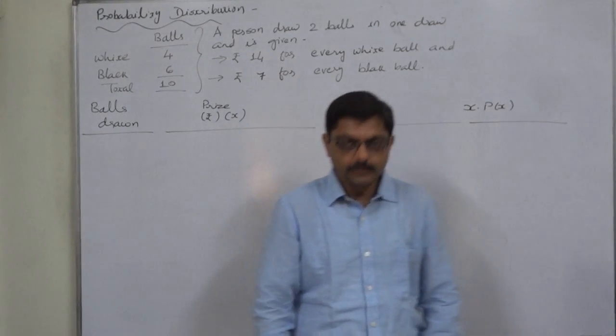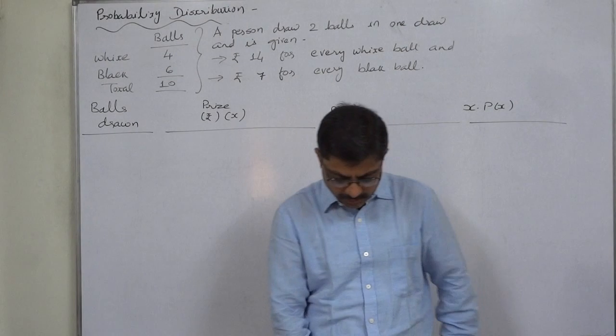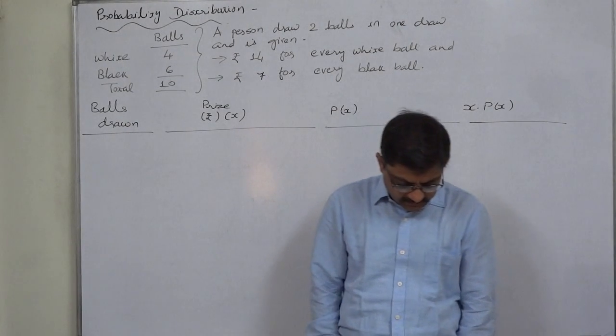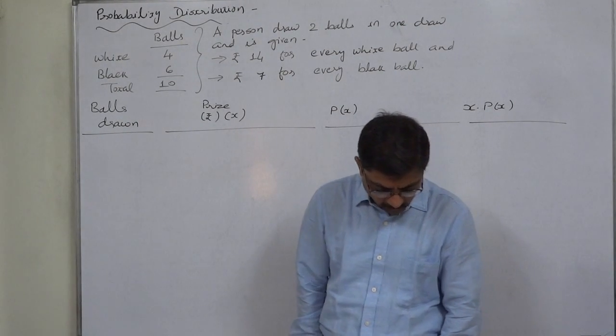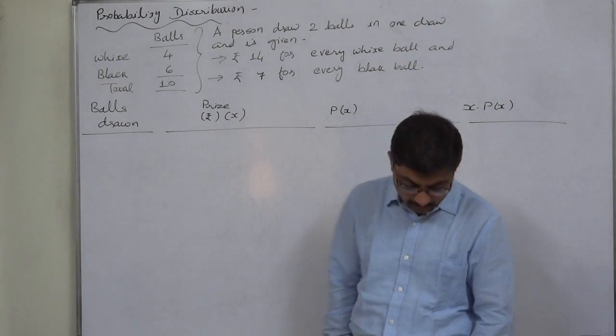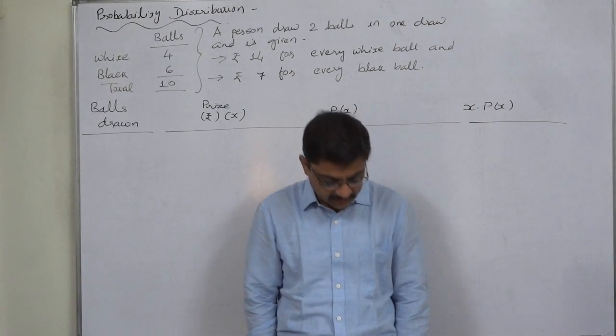Hello and welcome. It's a new case in probability distribution. A box contains 4 white and 6 black balls, that means total number of balls are 10.